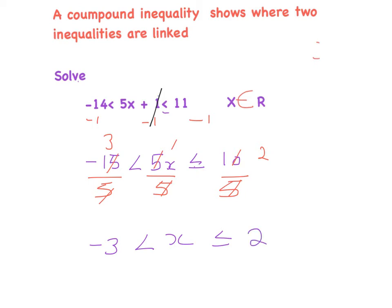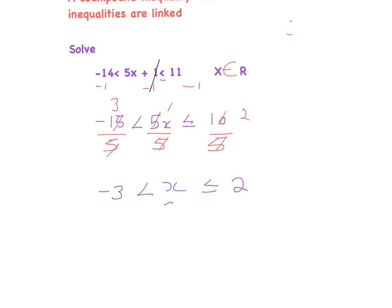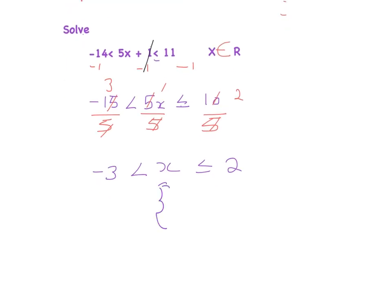So I now know minus 3 < x ≤ 2. If x is an element of the real numbers, the first value it could be is minus 2.99999 recurring — it gets really really close to minus 3 but never actually hits it — and it goes all the way up as far as 2. This is very difficult to read as a set, so we're going to represent this on a number line.